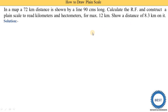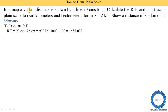As a solution, first we find the representative fraction (RF). The equation is: RF = length of drawing divided by actual length. Length of drawing is 90 centimeters and actual length is 72 kilometers, so RF = 90 centimeters divided by 72 kilometers. The units are different — one is in centimeters, the other in kilometers — so we need to convert kilometers into centimeters.